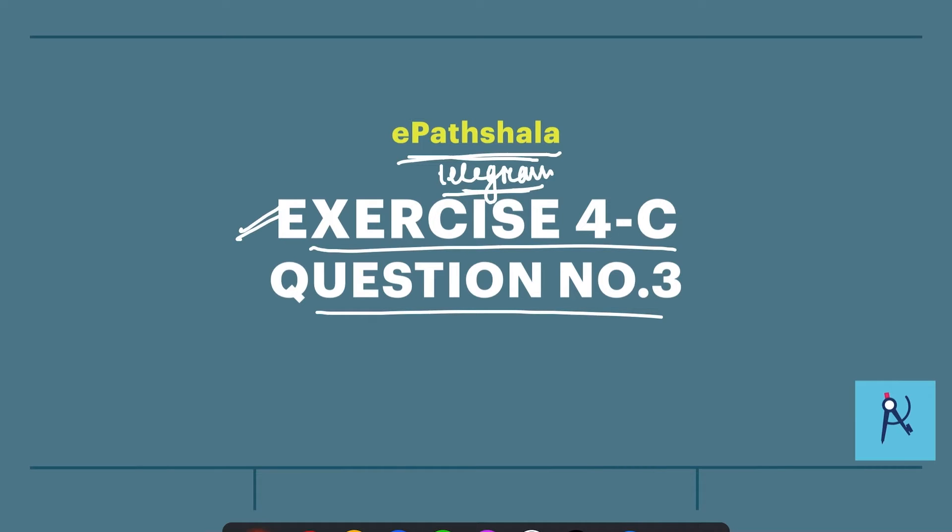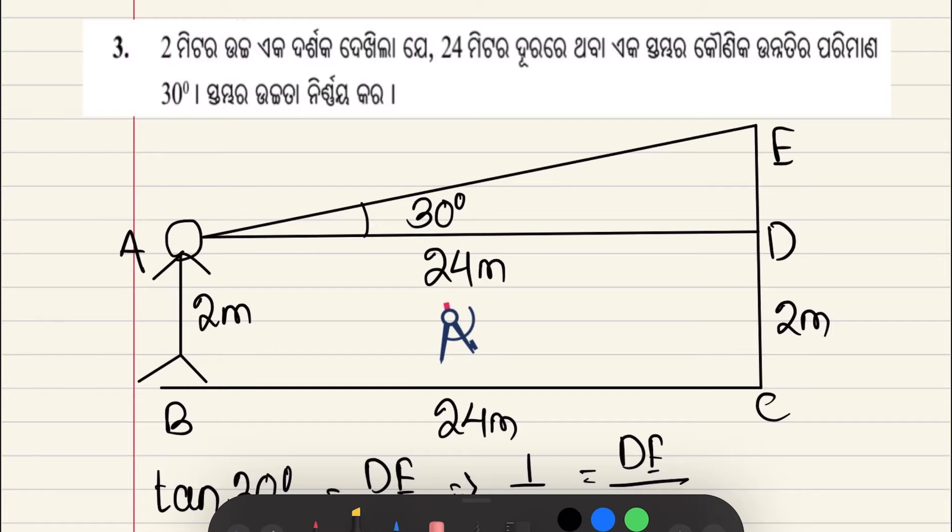That being said, question number 3. Question number 3 is 2 meters high. What was the difference between 24 meters? The difference between 30 degrees is the difference.